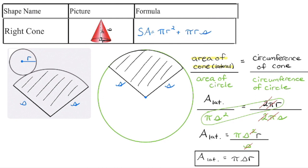What's important to remember is that S is the slant height of the cone, not the height of the cone. So the lateral area formula is pi times the radius multiplied by the slant height.